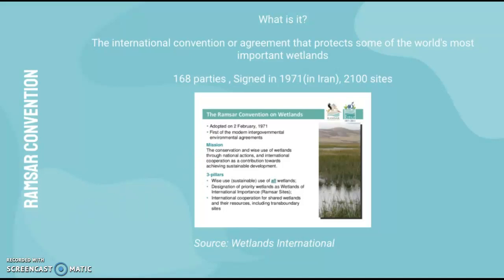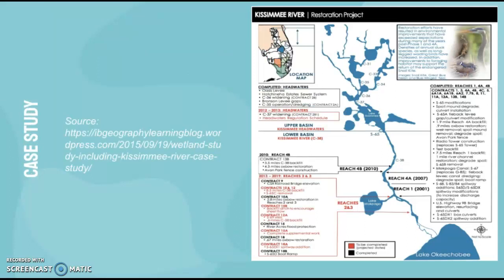The case study we're going to use is the Kissimmee River Restoration Project, because this is a very crucial wetland. Here's a map of it and some of the methods that have been used. The red ones are to be completed, and the black ones are already done. There are a lot of different restoration efforts being made to result in environmental improvements over the past years.